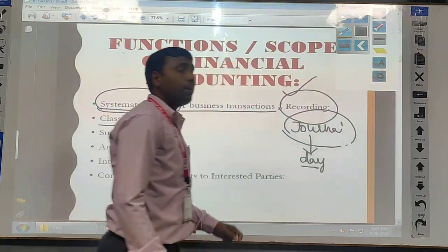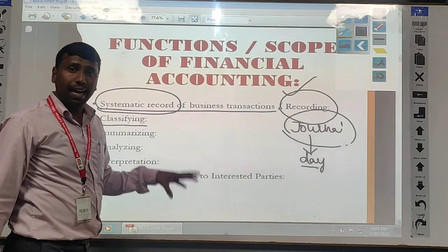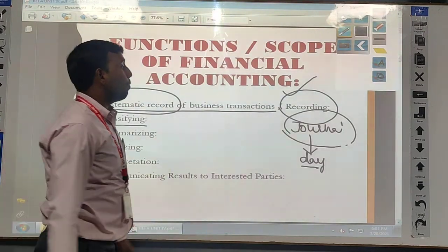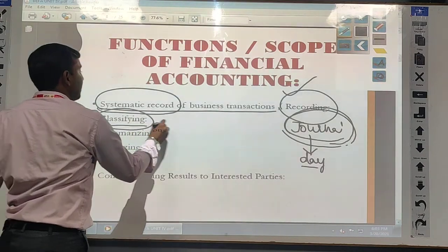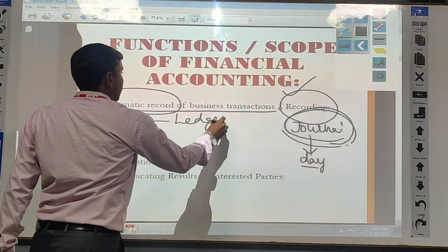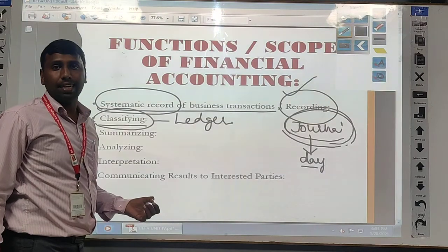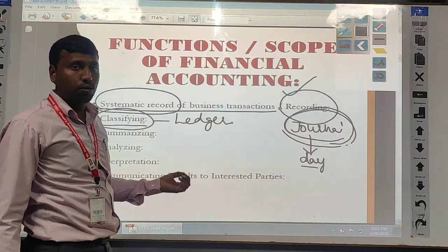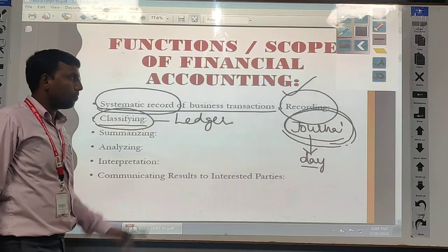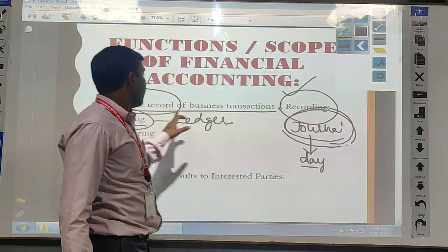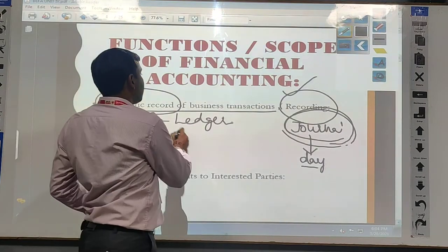A number of transactions will happen in that particular business every day. When using the journal, we are not finding exact results of the particular account. So whatever the journal entries are there, that we have to classify into the next category — that is called as ledger. A ledger is an account where particular related transactions are entered in a particular book. Each and every transaction — we have opened a separate account, and only the related transactions are entered in that book, called as Ledger. After classifying into ledgers, at the end of the particular period or at the end of the month, we are finding out the ledger balances — either a credit or debit balance.